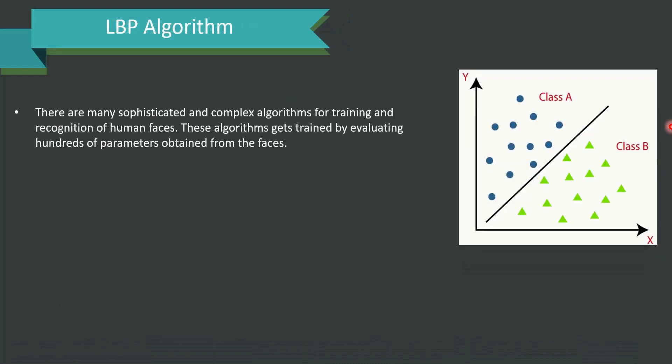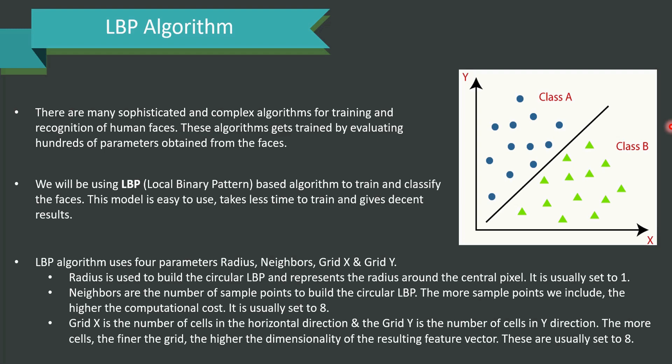Let's understand what exactly is the LBP algorithm. There are many sophisticated and complex algorithms for training and recognizing the human faces. These algorithms get trained by evaluating hundreds of parameters obtained from the faces. We will be using LBP which is local binary pattern based algorithm to train and to classify the faces. This model is very easy to use, takes minimal time to train and gives good results. The LBP algorithm uses four parameters: radius, neighbors, grid_x and grid_y.